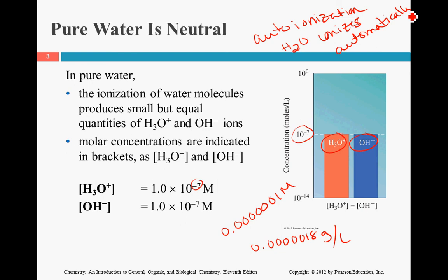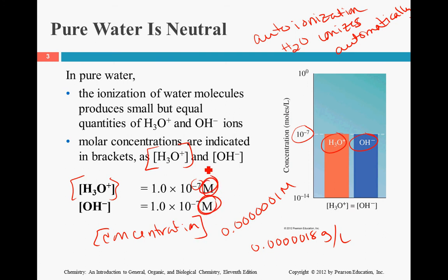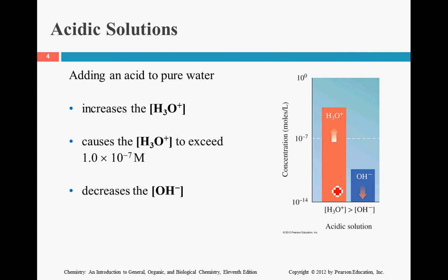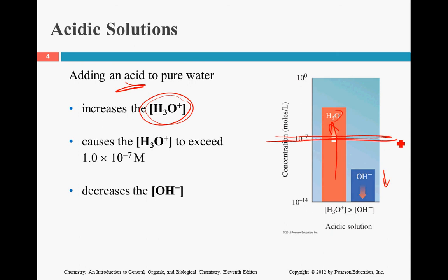Auto-ionization means that the water is ionizing automatically. Notice that the concentrations are the same. These brackets are the abbreviation for concentration, and you will always find that concentration in the unit of molarity. As we increase the H3O plus, the OH minus decreases because we have an abundance of H3O. So if we put acid in water, the H3O plus is going to go up. Once we've increased that H3O plus above the neutral point, it's now considered an acid.